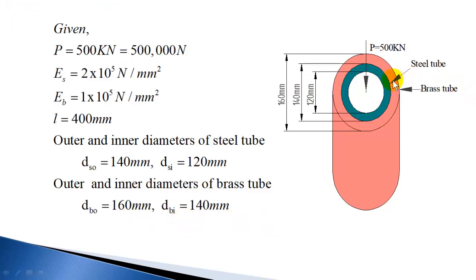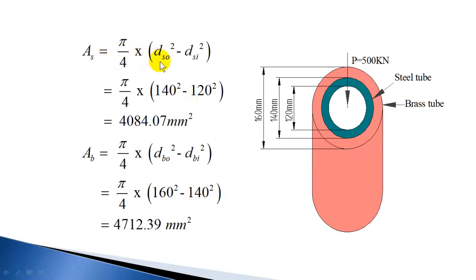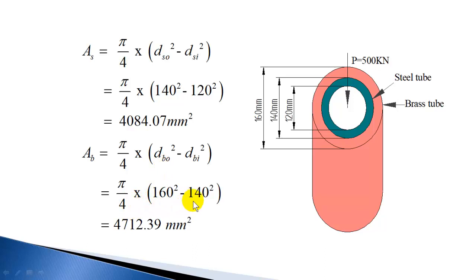So you can find out the cross-sectional area of the steel tube and brass tube. For the steel tube, using the formula π/4 × (outer diameter² − inside diameter²), which gives the annular area: π/4 × (140² − 120²) = 4084.07 mm². That is the cross-sectional area of the steel tube. Now the cross-sectional area of the brass tube is π/4 × (160² − 140²) = 4712.39 mm².